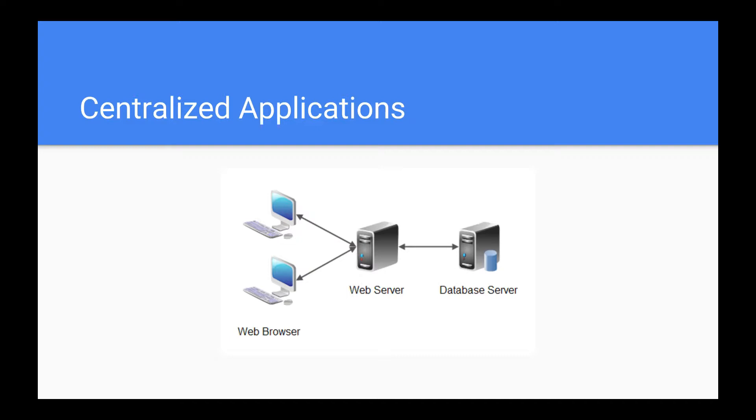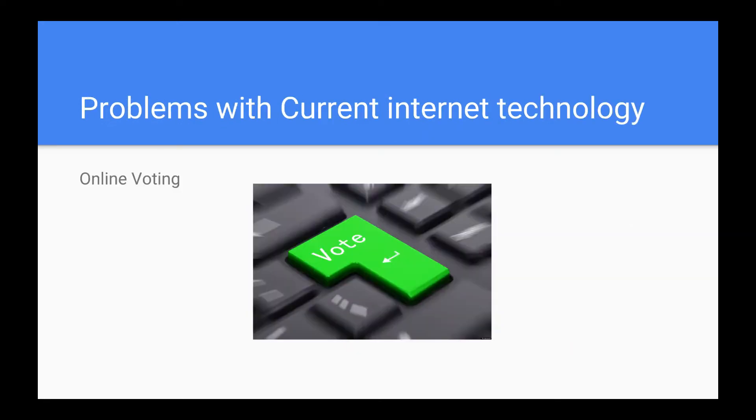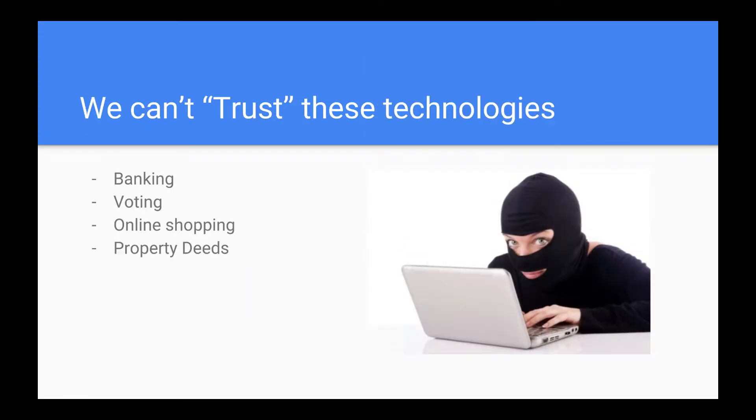Now let me ask you a question. We all know we have advanced so much in internet and technologies. Now most of the things are being done online whether it is banking or shopping or communication. But have you ever wondered why we still can't do some things online like voting? Wouldn't it be great if you could just vote in an election right from the comfort of your home? What exactly is stopping us from building such application? Any guesses? Yes right, trust.